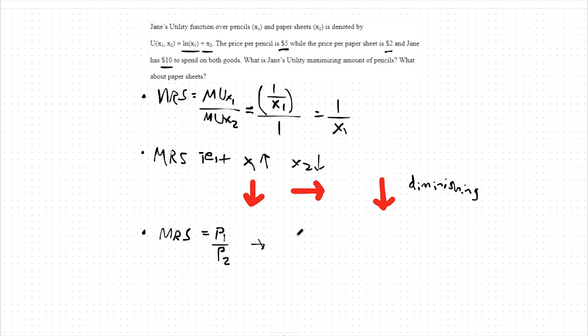Our MRS in this case, we found to be 1 over x1. And our price ratio would be $5, the price of good 1, over $2, the price of good 2. This means if we cross-multiply, x1 equals 2 fifths.